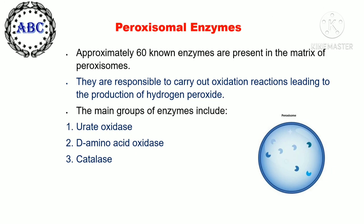There are approximately 60 known enzymes present in the matrix of peroxisomes. They are responsible for carrying out oxidation reactions leading to the production of hydrogen peroxide. The main groups of enzymes include urate oxidase, D-amino acid oxidase, and catalase.